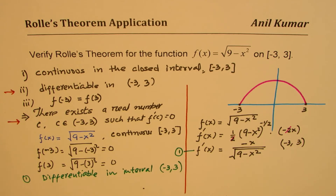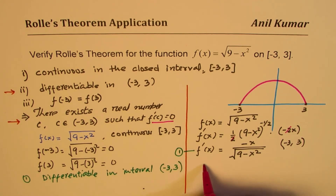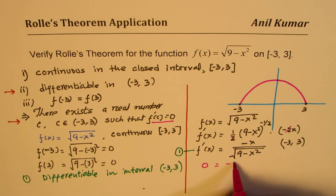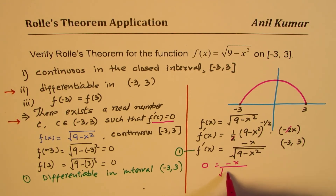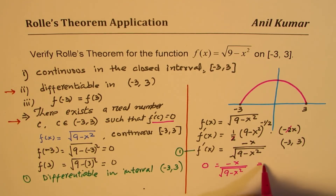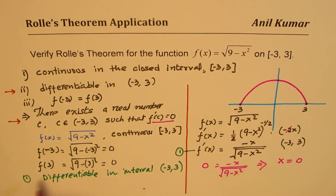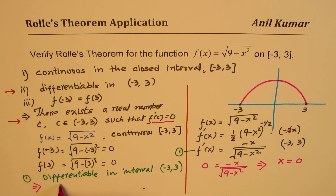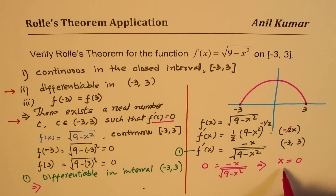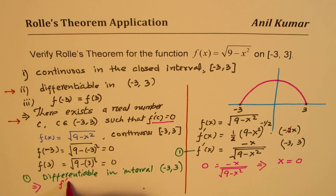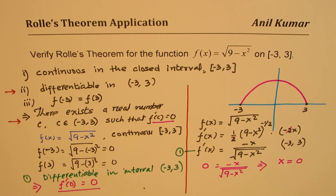Now let's figure out where the derivative equals 0. If we equate f'(x) = -x / √(9 - x²) to 0 and solve, we get x = 0. So c = 0. The derivative of the function at 0 is indeed 0, so we got a point in the open interval where the derivative is 0.